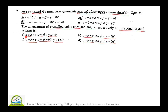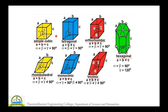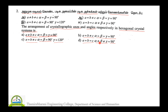Looking at Option A: a ≠ b ≠ c, α = β = γ = 90°. This corresponds to the orthorhombic crystal system. So Option A belongs to orthorhombic — Option A is wrong.